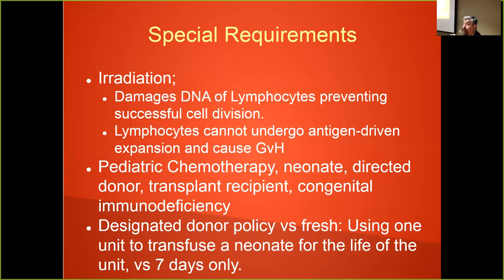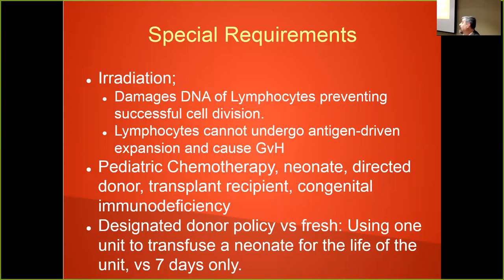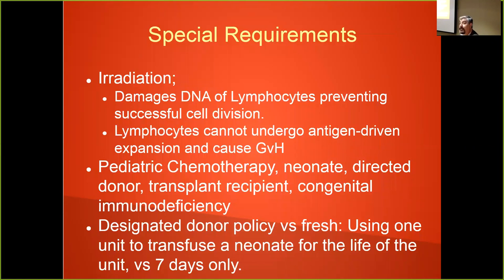Irradiation damages DNA, specifically targeting lymphocytes so those cells can't divide. Neutrophils don't divide — they're already mature — but transfused lymphocytes can expand and cause graft-versus-host disease. This was originally discovered in neonates who got skin rash, diarrhea, and hyperbilirubinemia from transfusion-related GVHD. Irradiation is used in pediatric patients receiving chemotherapy, hematological malignancies, neonates, and directed-donor transfusions, since relatives are more HLA-matched, increasing the GVHD risk. For congenital immune deficiency it's also indicated, though acquired immune deficiency is case-by-case.